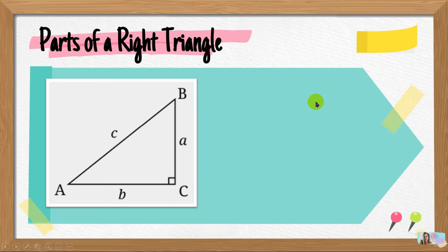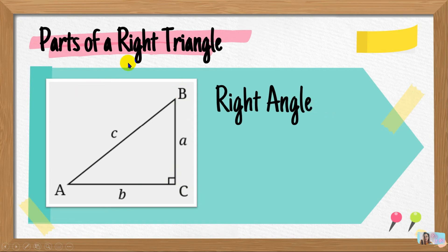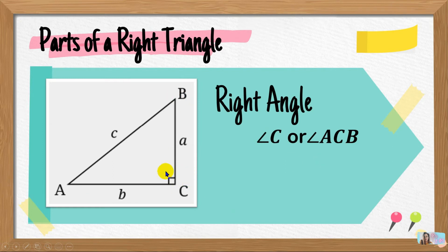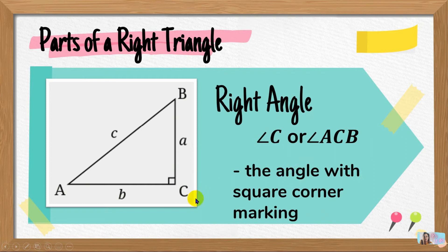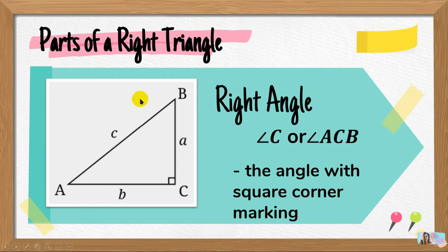Now let's look at the angles. Of course, we always have the right angle — we can't call it a right triangle without one. Our right angle is angle C, or angle ACB or BCA. This right angle can be easily identified when we see the square corner marking. The measurement of a right angle is always 90 degrees. So if the right angle is 90 degrees, the remaining two angles together also measure 90 degrees.